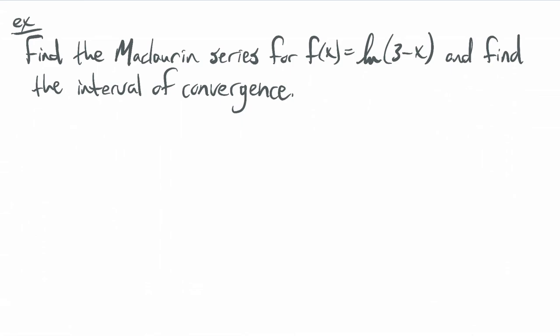Find the McLaurin series for f of x equals ln of 3 minus x, and find the interval of convergence. Much like the previous one, we start by finding derivatives.